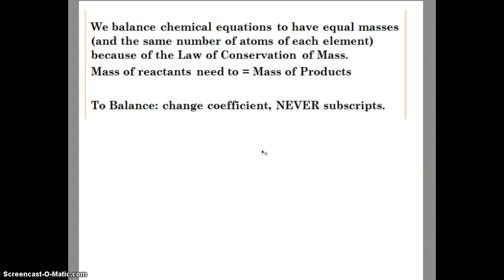We balance chemical equations to have equal masses and the same number of atoms of each element on both sides of the chemical equation because of the law of conservation of mass. The mass of the reactants need to equal the mass of the products. To balance, we change coefficients, never subscripts.